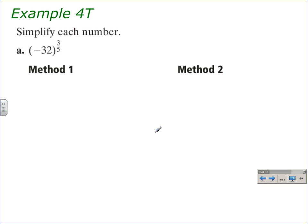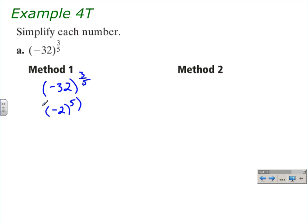We'll use those properties to simplify these numbers. We can do this in one of two ways. The first method uses the properties of exponents. Let's copy down negative 32 to the three-fifths power. Since the denominator represents the index of the radicand, we think of what number raised to the fifth power gives negative 32 — that's negative two — so we write this as negative two to the fifth power, raised to the three-fifths power.